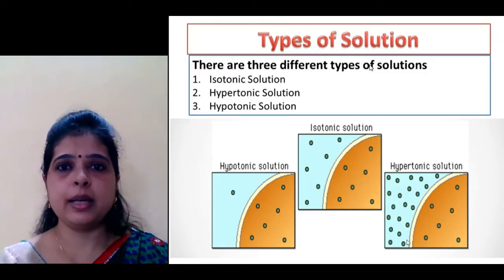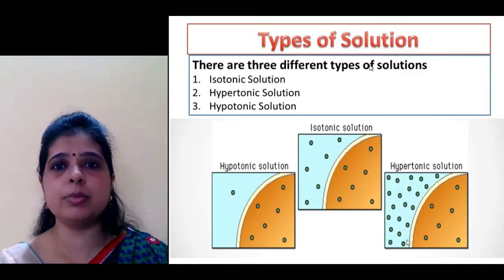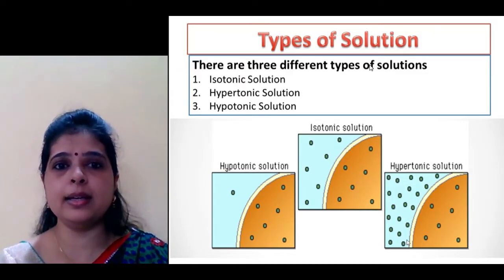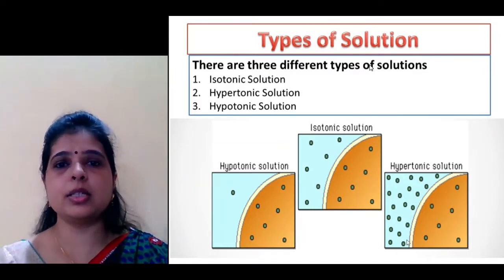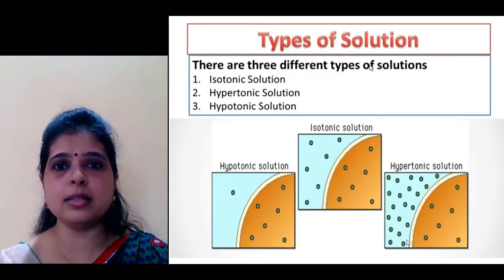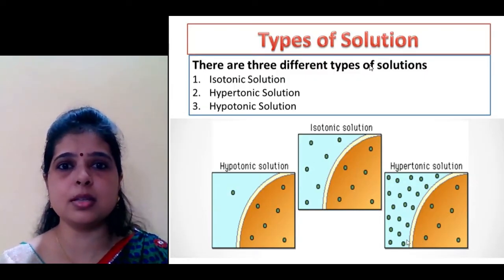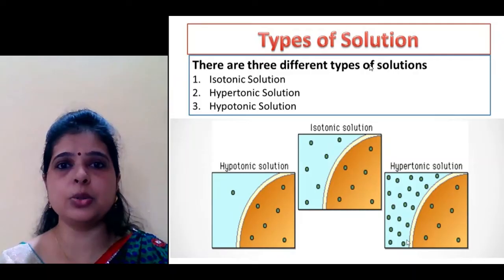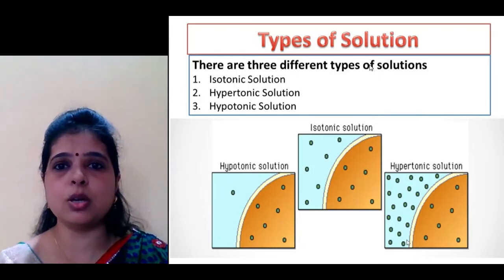Now suppose in one glass you add 5 grams of sugar, and in the second glass you add 10 grams of sugar. I am telling you this to help you understand. So the glass with 5 grams of sugar is the hypotonic solution with respect to the glass with 10 grams of sugar, which is the hypertonic solution. Hyper means more, hypo means less. So the one with more sugar added is the hypertonic solution with respect to the solution that has the lower concentration of sugar.